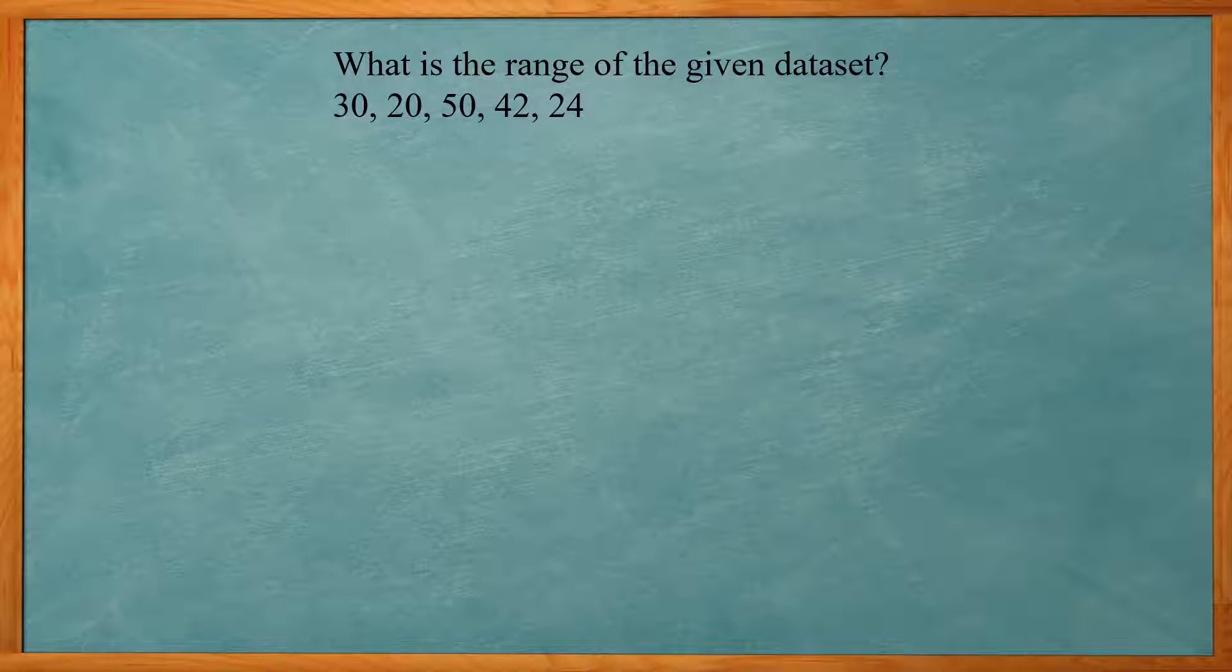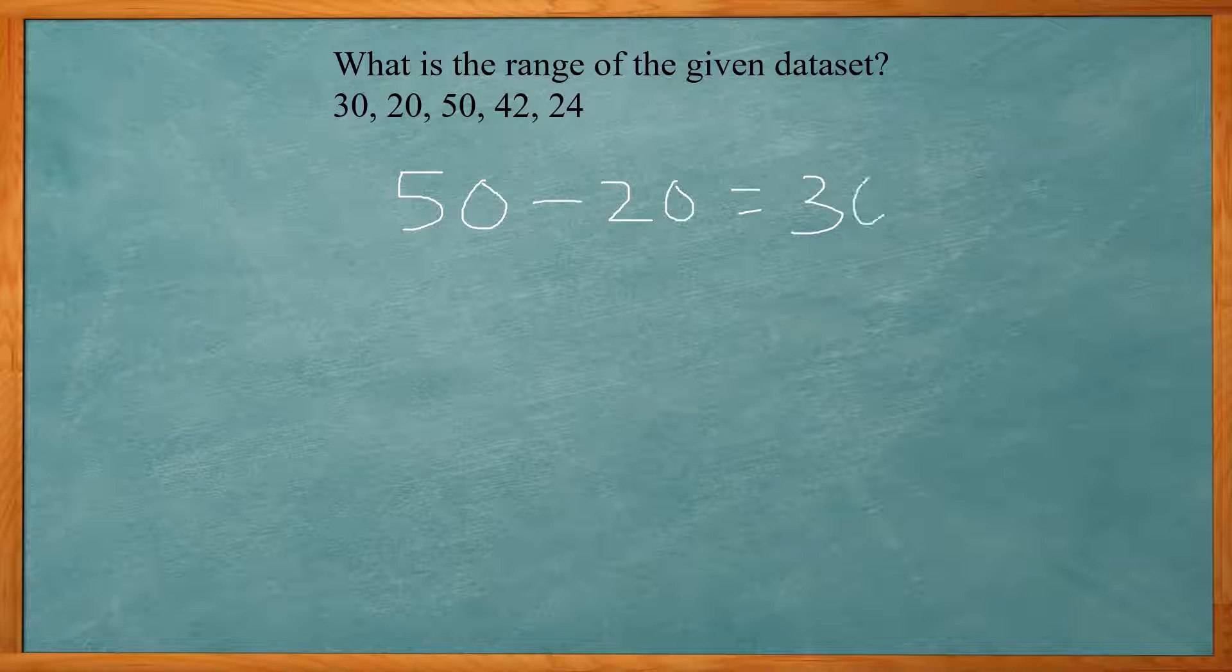So this one says, what is the range of the given data set? Remember the range is the largest value minus the smallest value. So our largest value is 50. And our lowest value is 20, which will give us 30. So the range of this data set is 30.